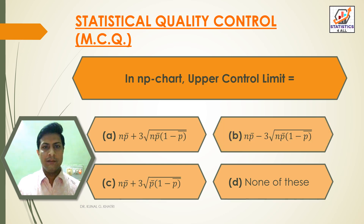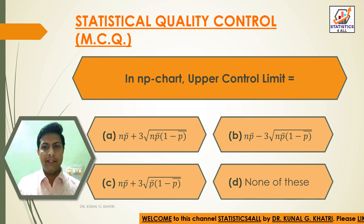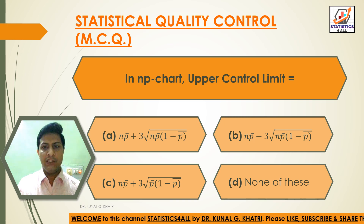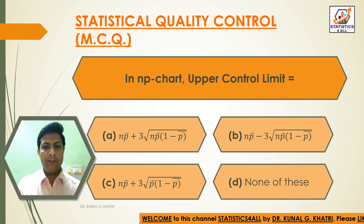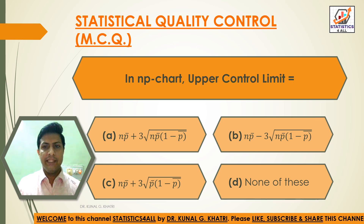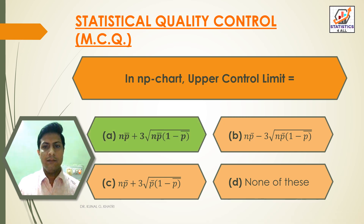Next question: in NP chart, upper control limit is equal to? Option A: NP bar plus 3 into under root NP bar into bracket (1 minus P bar), Option B: NP bar minus 3 into under root NP bar into bracket (1 minus P bar), Option C: NP bar plus 3 into bracket (1 minus P bar), Option D: none of these. Answer: Option A — NP bar plus 3 into under root NP bar into bracket (1 minus P bar) is the upper control limit in NP chart.